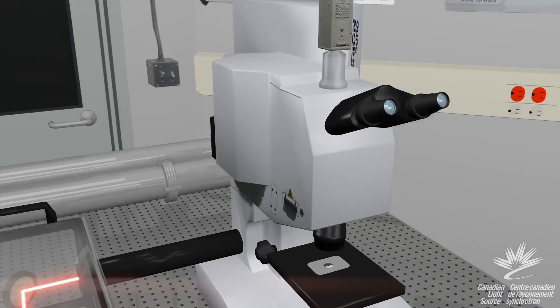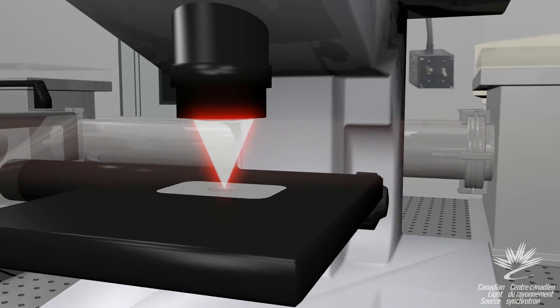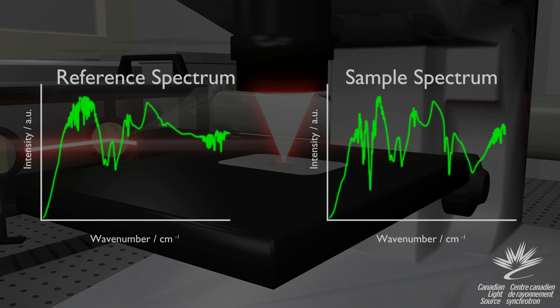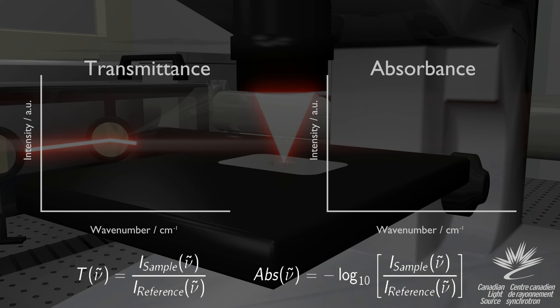The infrared light is directed from the spectrometer into the microscope and through the sample. During absorption spectroscopy, certain wavelengths will be attenuated, creating a slightly different spectrum. By dividing the sample spectrum by the reference spectrum, we can obtain a transmittance spectrum which shows which wavenumbers of light are attenuated and transmitted through the sample.